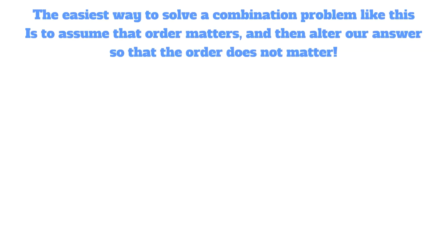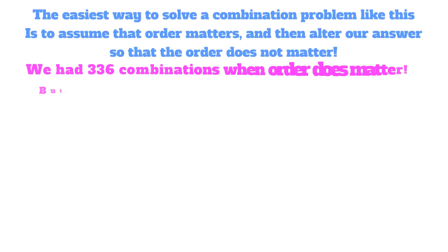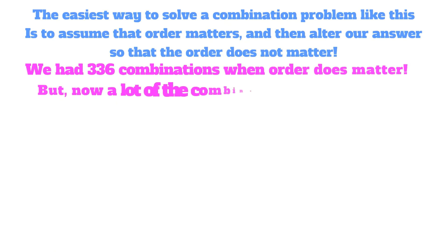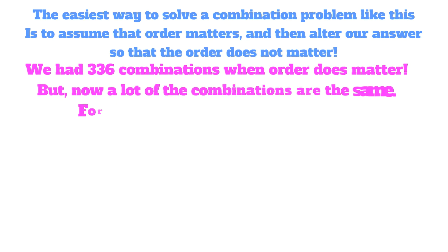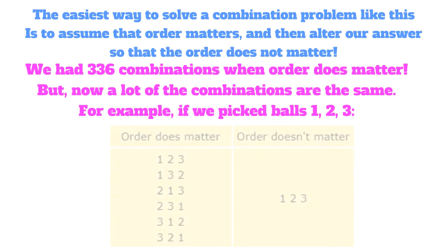The easiest way to solve a combination problem like this is to assume that order matters and then alter our answer so that the order does not matter. We get 336 combinations when order does matter. But now, a lot of the combinations are the same.